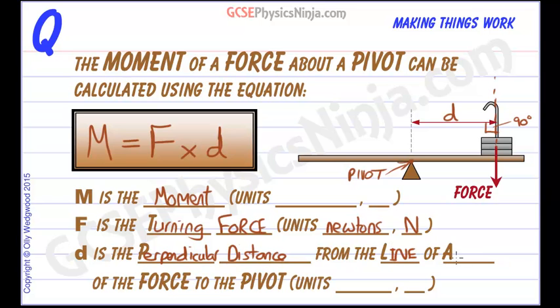From the line of action of the force. So there's our line of action and the distance is at 90 degrees to the pivot. And the units can vary but usually we'd use meters or little m.